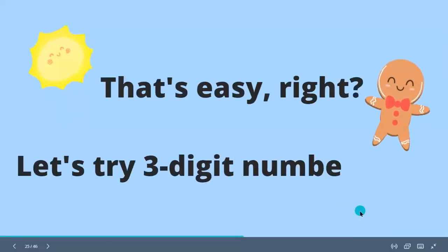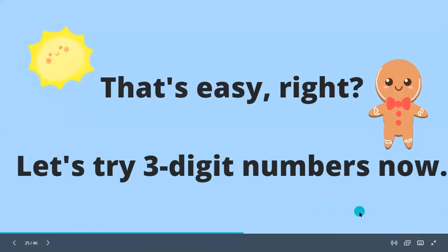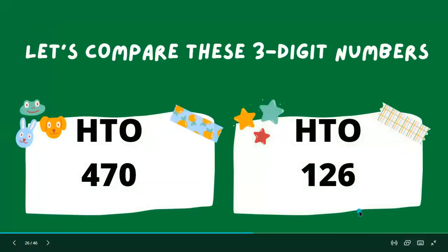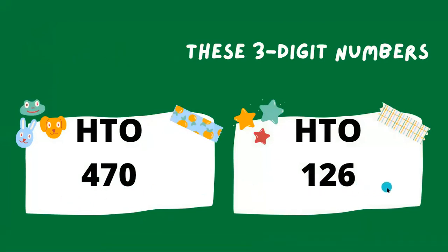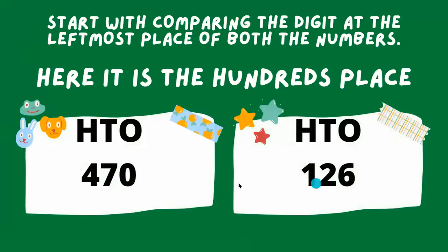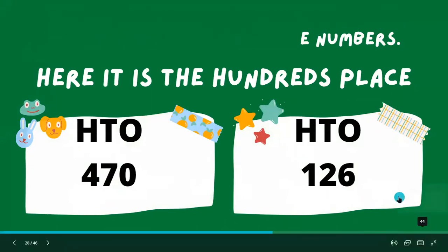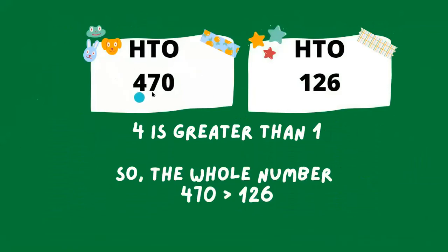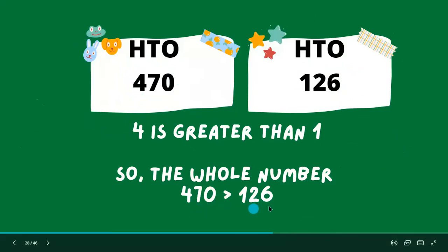That's easy, right? Let's try three-digit numbers now. Let's compare 470 and 126. Start with comparing the digit at the leftmost place of both numbers — here it is the hundreds place. Four is greater than one, so the whole number 470 is greater than 126. We can also write it as 470 is greater than 126 using the greater than sign.